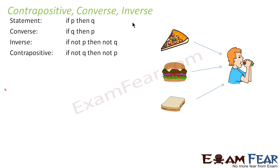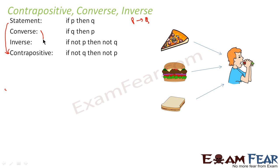So, to repeat once again: if the statement is p to q, let's find the contrapositive first, because the contrapositive and the statement are both the same — if the statement is true, the contrapositive will also be true. The statement and contrapositive are the same, and the converse and inverse are also the same.